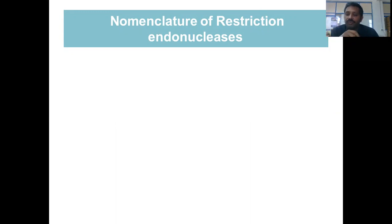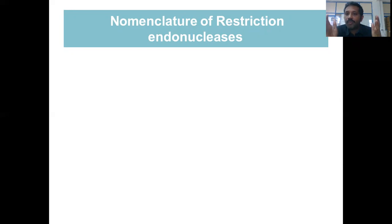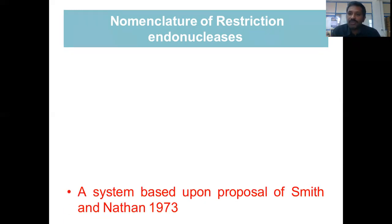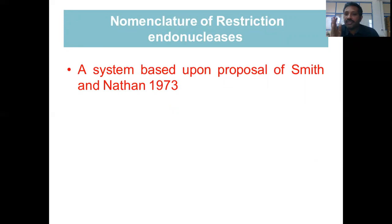The discovery of many restriction enzymes called for a uniform system of nomenclature. When you have many enzymes without a proper system to name them, there is a chance of rediscovering already discovered ones. To avoid that, Nathan and Smith called for a system of nomenclature based on consistent criteria.